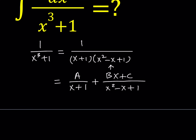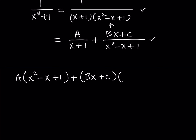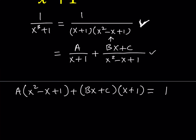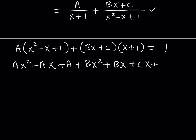By setting the coefficients equal to each other, we're going to find the values of A, B, and C. Let's make a common denominator and then just forget about the denominators. So A will be multiplied by x squared minus x plus 1, and Bx plus C will be multiplied by x plus 1. This is supposed to equal 1, because that's the numerator that comes from here. Let's distribute: this gives me ax squared minus ax plus a, plus bx squared plus bx plus cx plus c, and the whole thing is equal to 1.